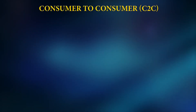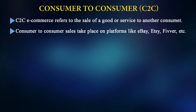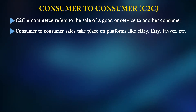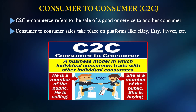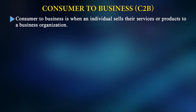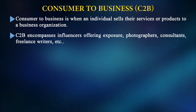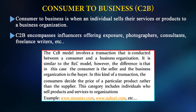Consumer to Consumer (C2C) e-commerce refers to the sale of goods or services between consumers. C2C sales take place on platforms like eBay, Etsy, and Fiverr. It is a business model in which individual consumers trade with other individual consumers — a member of the public is selling to another member of the public. Consumer to Business (C2B) is when an individual sells their services or product to a business organization. C2B encompasses influencers offering exposure, photographers, consultants, freelancers, and writers.